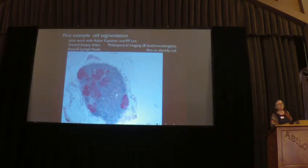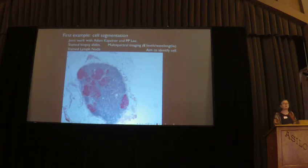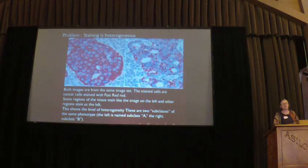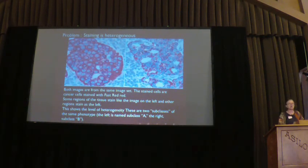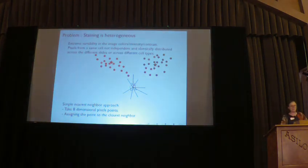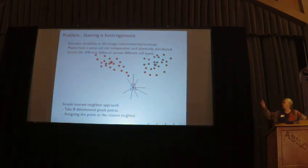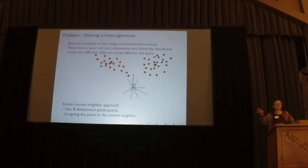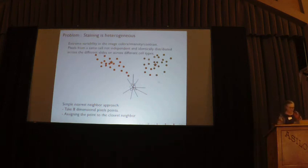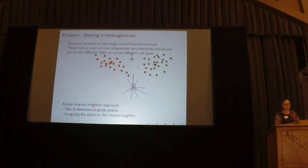This is a cell segmentation problem where we're trying to detect different cell types. The red cells are stained cancer cells, the blue cells are healthy cells, and we also have various immune cells in the same image — this is multispectral imaging. One problem is that the staining is extremely heterogeneous: from one slide to another you don't have the same depth of color for the cancer cells or the healthy nuclei, so you have to do something much more adaptive. Imagine two clusters of points in an eight-dimensional hyperspectral space with eight wavelengths, and you want to decide what the different cell types are.